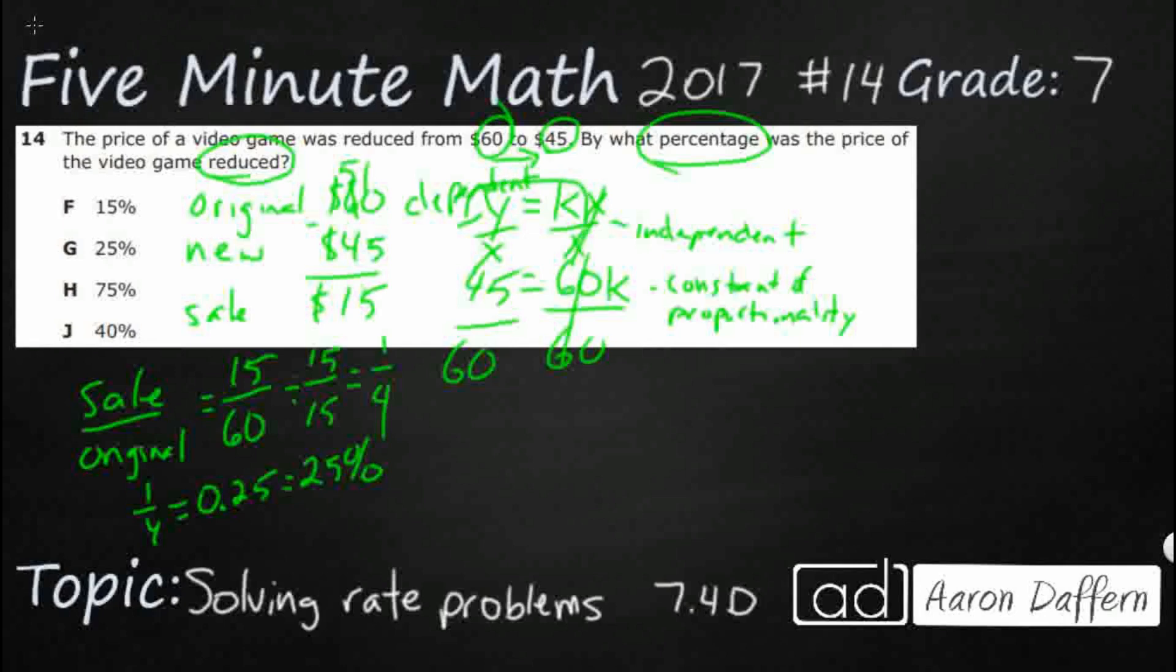And look at this. K equals Y over X. That's an equation that's on your mathematics chart as how to find the constant of proportionality. So let me rewrite this here. K equals 45 over 60. Let's divide that by 15s. So 45 divided by 15 is 3 times, 60 divided by 15 is 4 times. So our K or our constant was 3 quarters or 0.75 or 75%. Now, here's the thing.